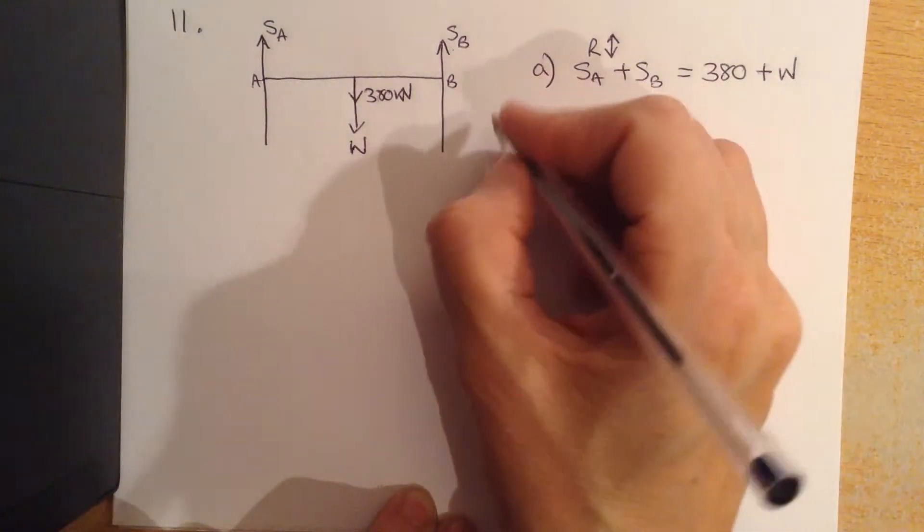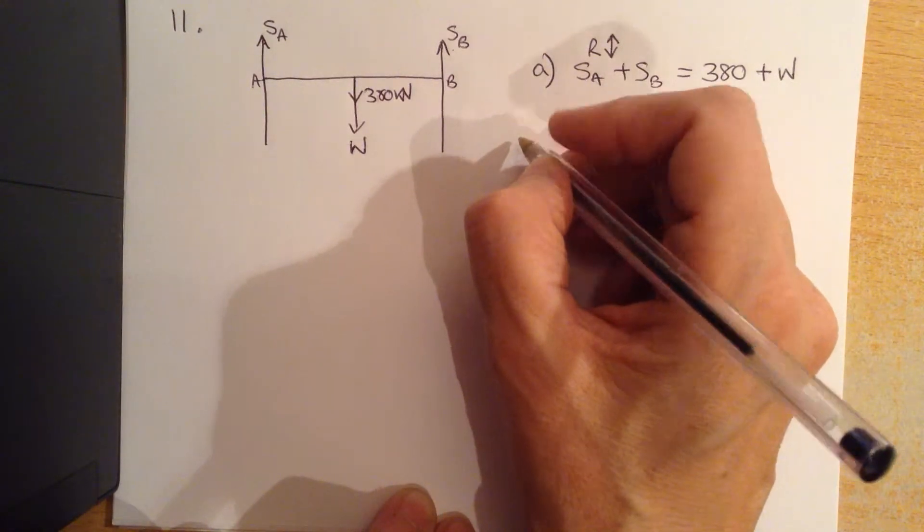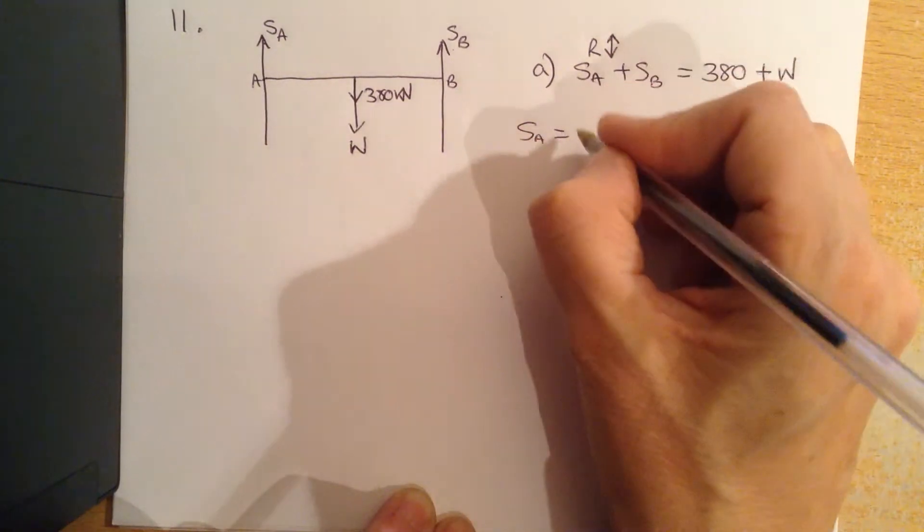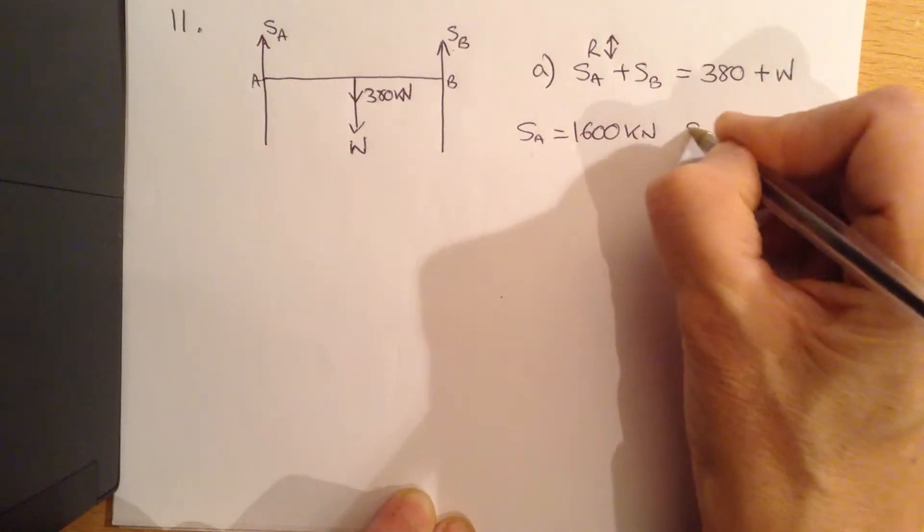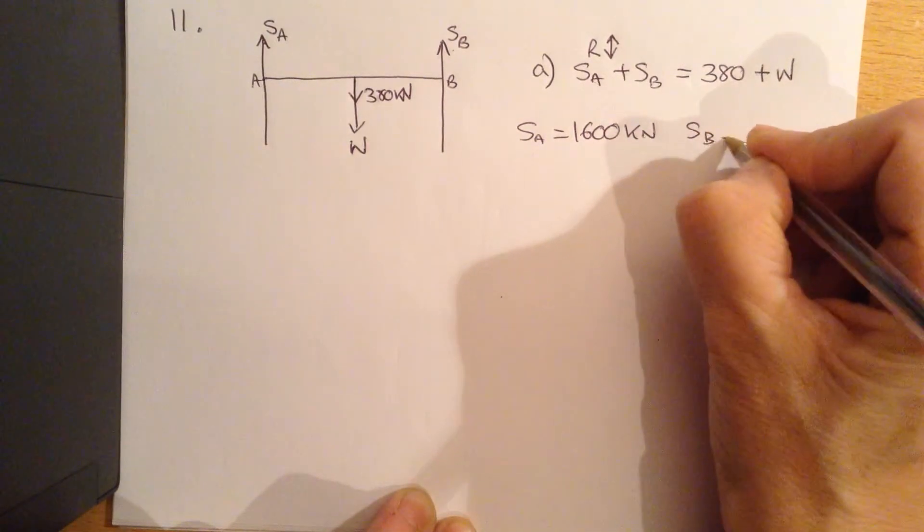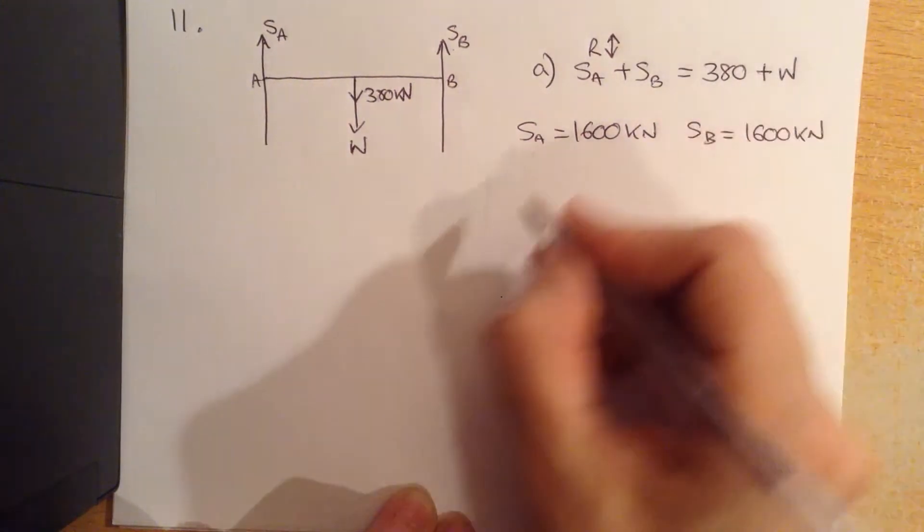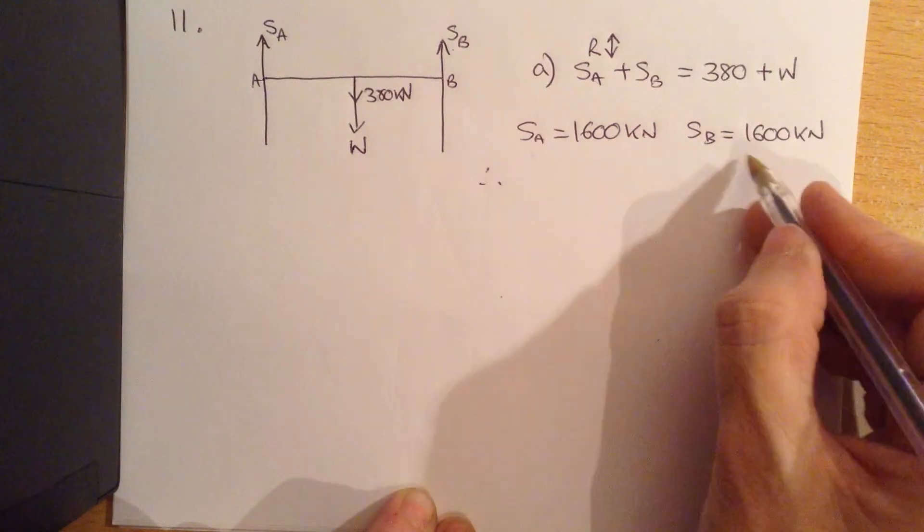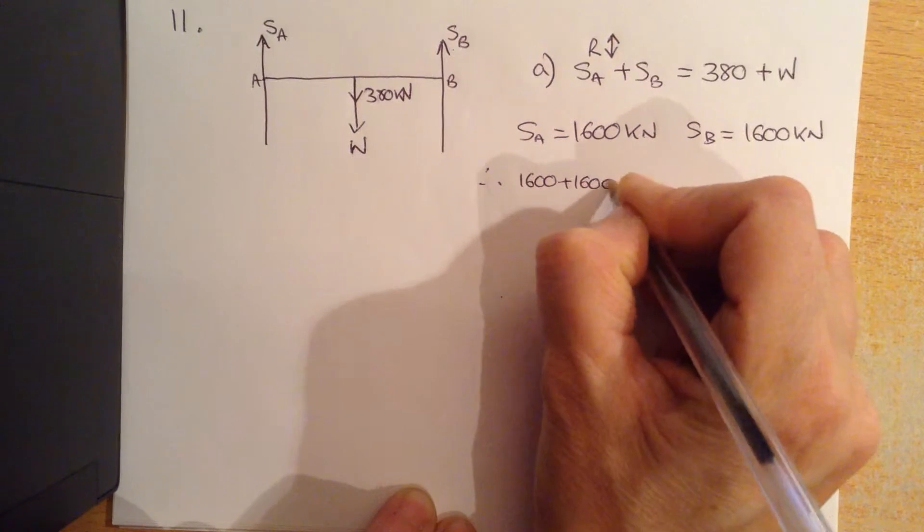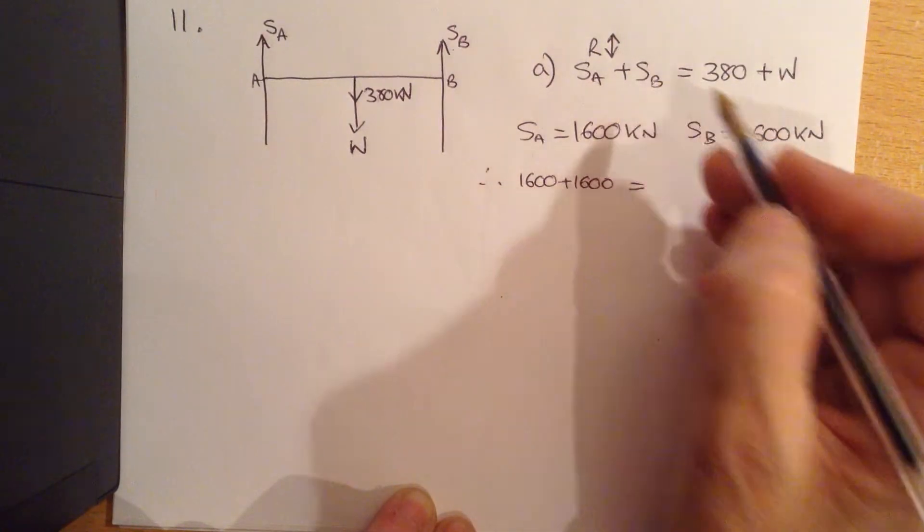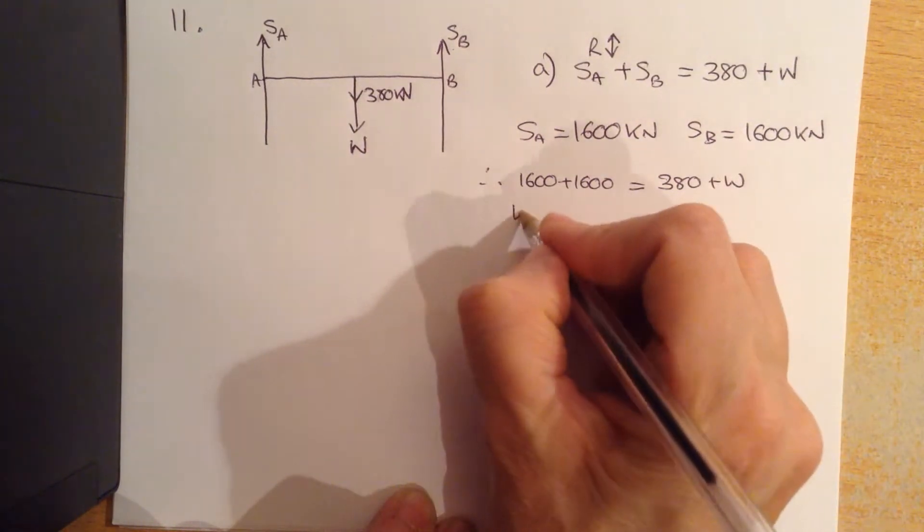Now what do we know? The question tells us that SA is equal to 1600 kilonewtons and SB is equal to 1600 kilonewtons.